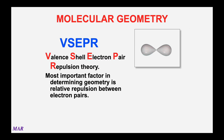The theory used to describe geometries as applied to Lewis structure is called VSEPR, which stands for valence shell electron pair repulsion theory. If you have a central atom connected to two other atoms, the bond angle is going to be a reflection of those electrons trying to be as far apart from each other as they can.